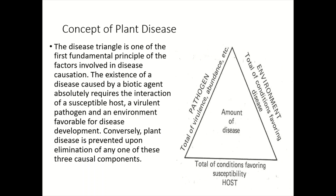Next is the concept of plant disease. The concept of plant disease can be more elaborated from the disease triangle concept. Disease triangle is one of the first fundamental principles of the factors involved in disease development or causation. The existence of a disease caused by a biotic agent absolutely requires the interaction of a susceptible host, a virulent pathogen, and a conducive or favorable environment. We can also control plant diseases by elimination of any of these three causal components.